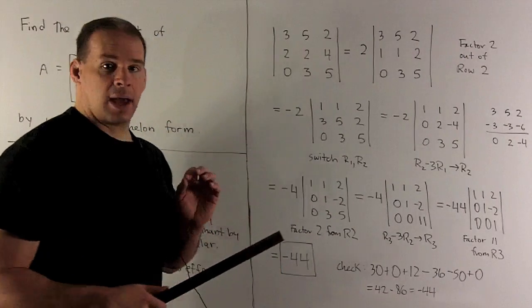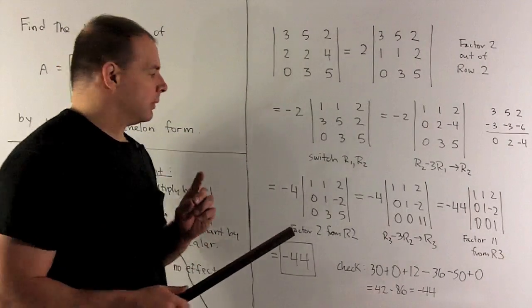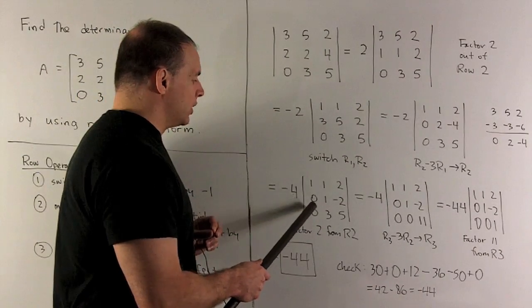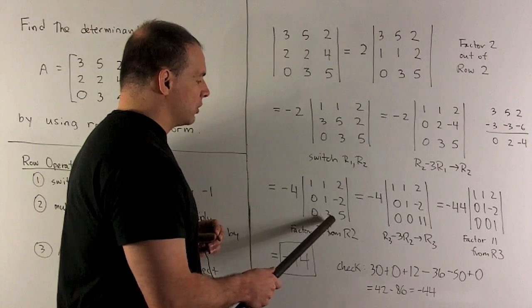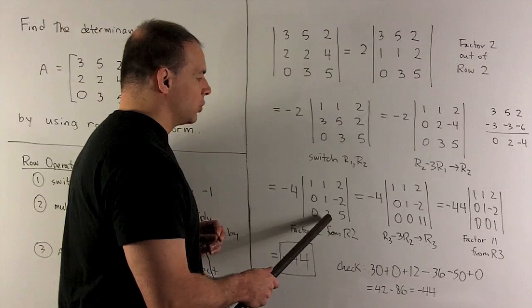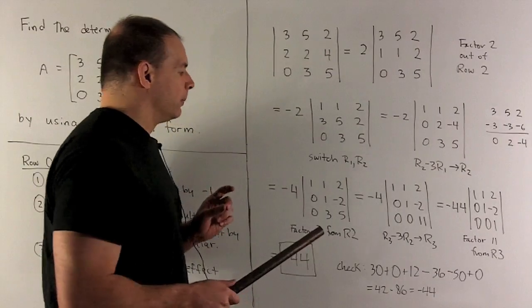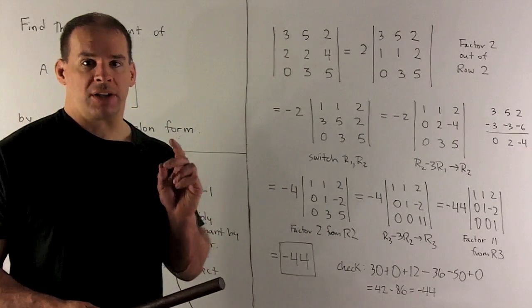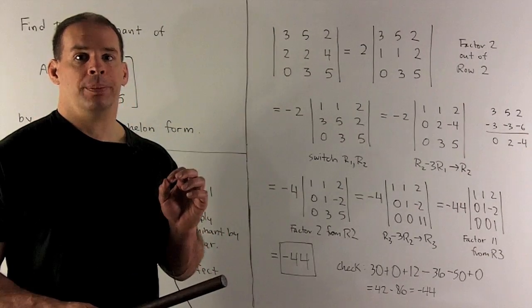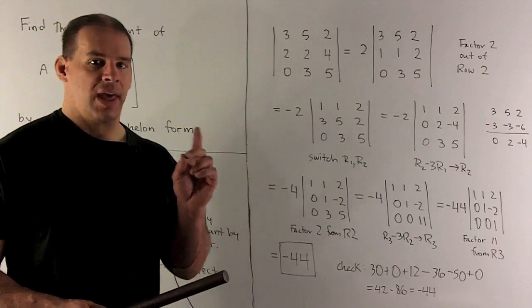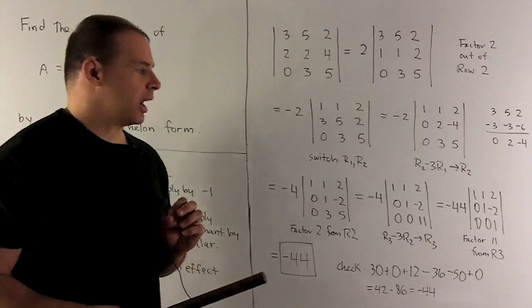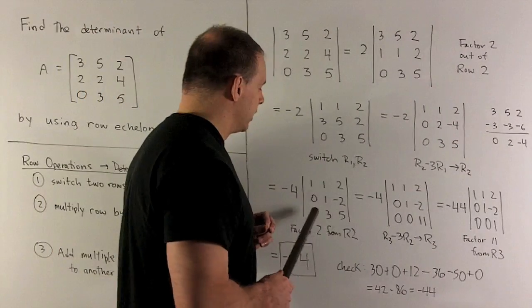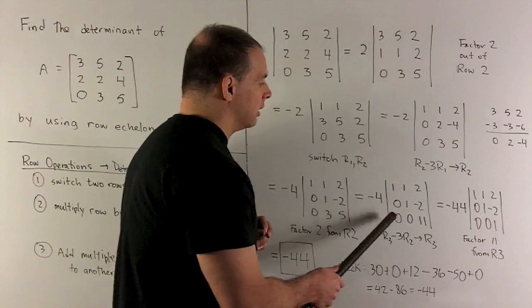Next step for row echelon form: we have 1, 0, 0 and a 1, and now I want to turn this 3 into a 0. So we'll take row 3 and subtract off 3 times row 2. Working that out, we're going to be left with 0, 0, 11.